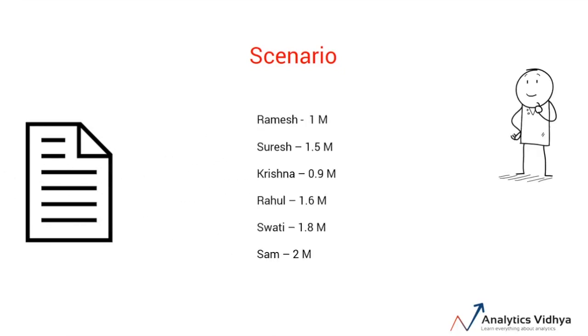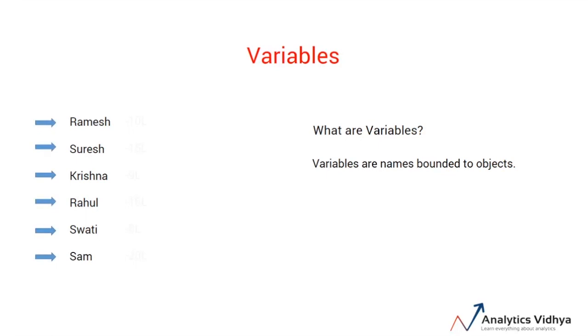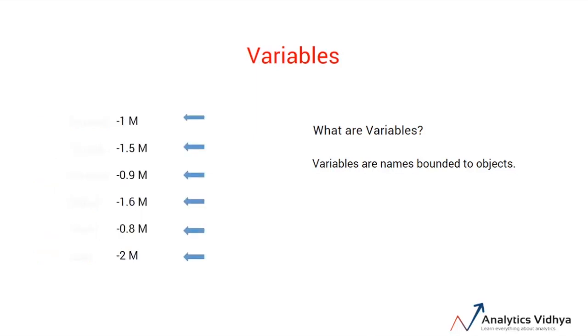You may or may not have realized that you made use of names or variables to make a problem easier. So what are variables? Simply described, variables are names bound to objects. Here these arrows represent the variables and these are the constant values or the objects.